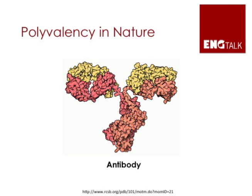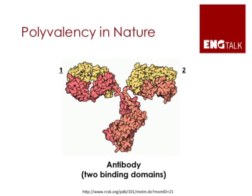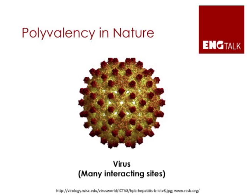Nature makes extensive use of polyvalency, and so many molecules or entities found in nature are polyvalent. The Y-shaped molecule shown in this figure is an antibody, which is a component of our immune system. This antibody contains two arms, which are antigen binding domains that would bind to pathogens such as viruses. The next figure shows you a virus, which is itself polyvalent — the spikes you see in this figure are actually multiple viral attachment proteins.